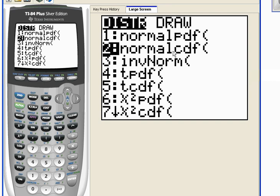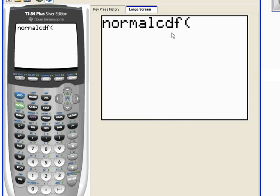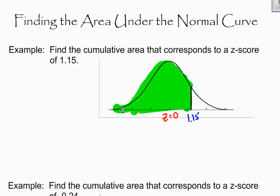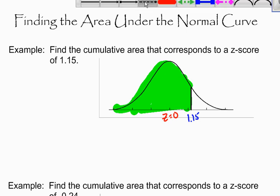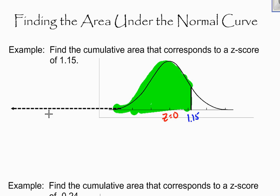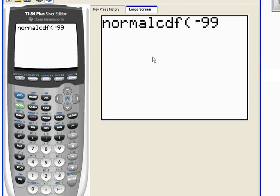Normal tells us that we're using a normal model. CDF stands for cumulative density function, density being area. So I'm going to select number two. The calculator wants a left-hand boundary and a right-hand boundary. My right-hand boundary is 1.15 — I can see it — but what is my left-hand boundary? Technically this curve goes on forever and never stops. Most books and teachers will tell you that you just need a large enough number for your left-hand boundary, so I'm going to use negative 99.